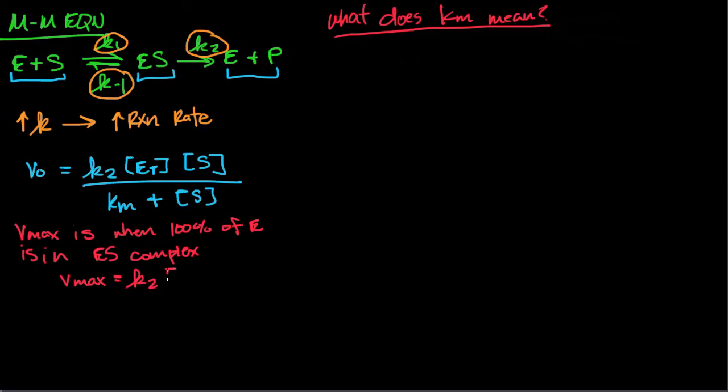Rewriting the equation for V0, what you want to remember is that this k2 times enzyme total is really Vmax. So there's two important things to take a look at: Vmax and Km.